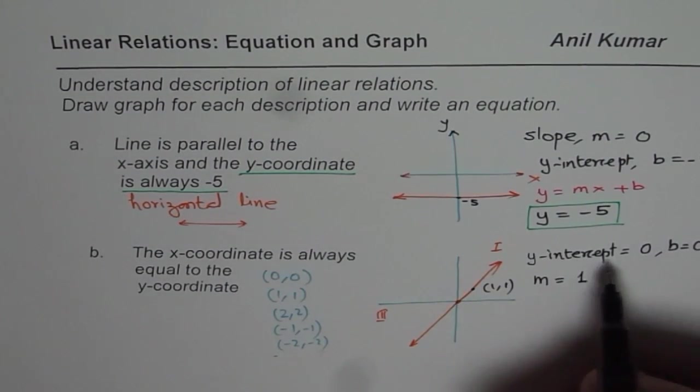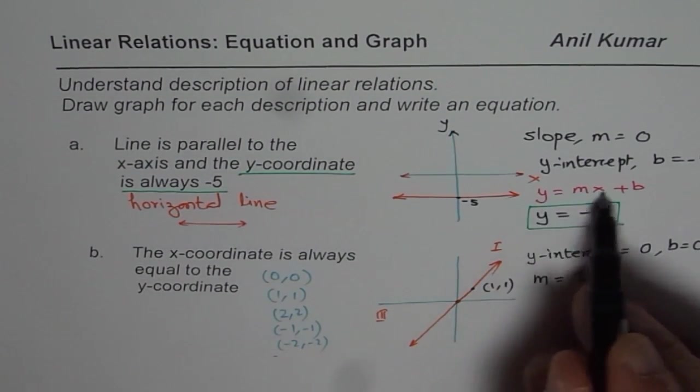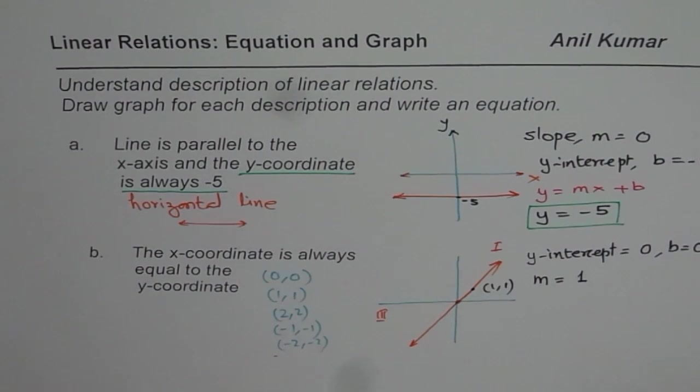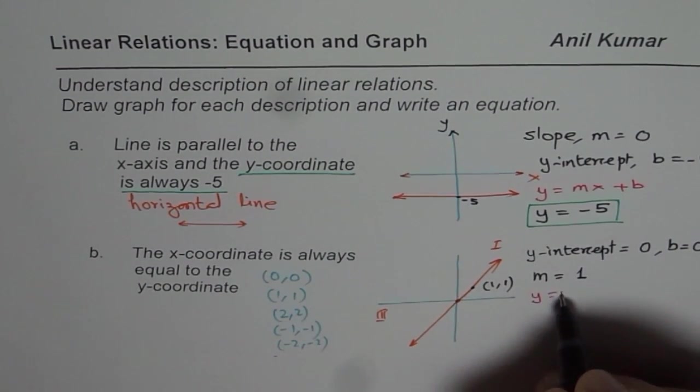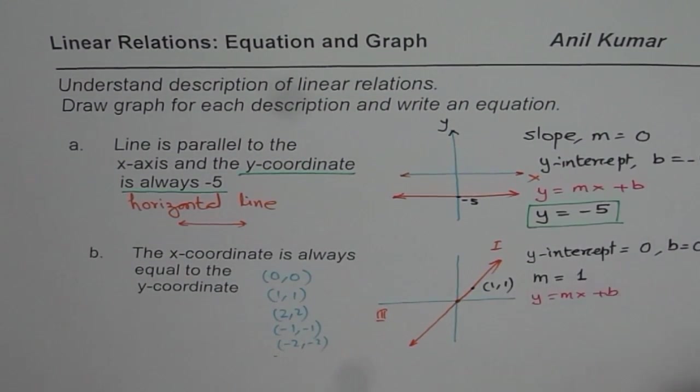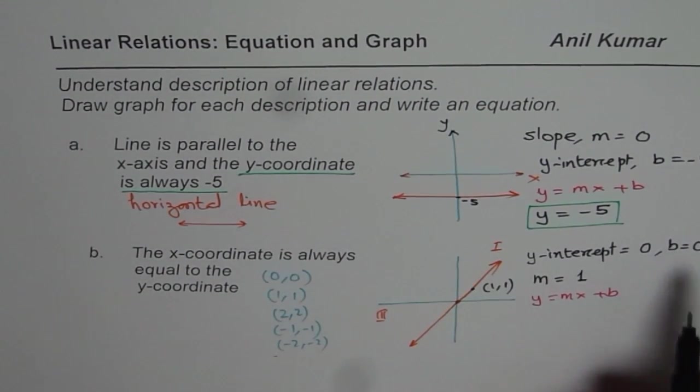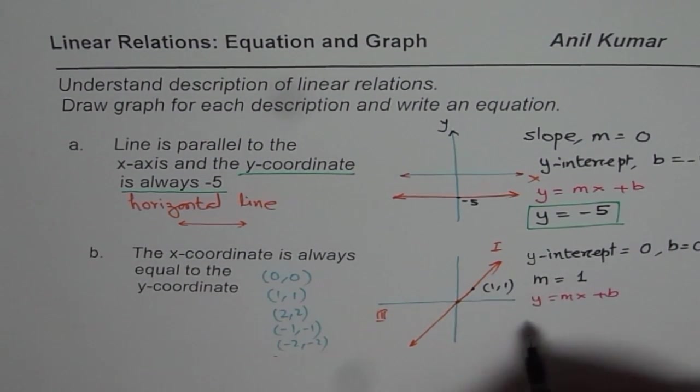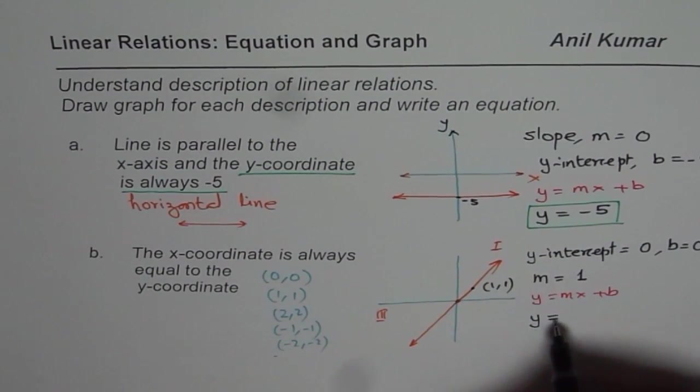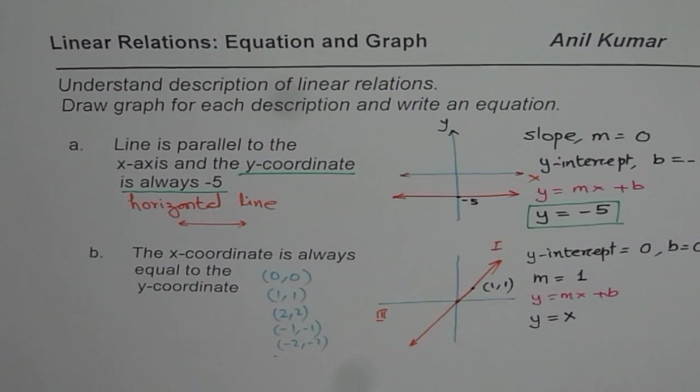Since we know y-intercept and slope, we can write equation in the form y = mx + b. Slope is 1, and y-intercept is 0, so b is 0. Therefore the equation is y = x.